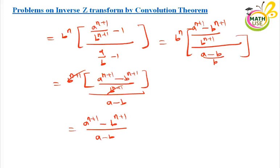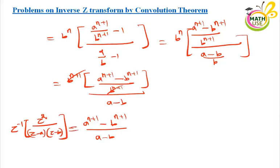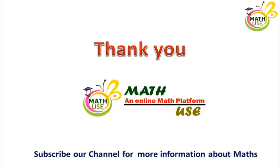Therefore, the inverse Z transform of z squared divided by z minus a times z minus b equals a to the power n plus 1 minus b to the power n plus 1, divided by a minus b. That's all, guys. Thank you for watching this video. If you like this video, you can subscribe to our channel.